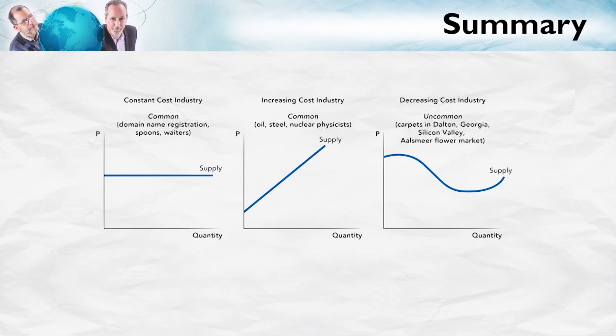The increasing cost industry — oil, steel, nuclear physicists — sees industry costs increase as output increases, and as a result, the supply curve slopes upward. And finally, the uncommon but important case of the decreasing cost industry, where at least over some range and in a particular location, costs can fall with increased quantity, and how this type of cost structure generates clusters — clusters like Dalton, Georgia, like Silicon Valley, and Hollywood, and so forth.